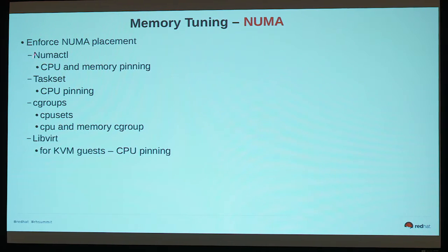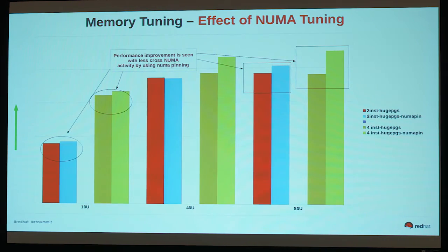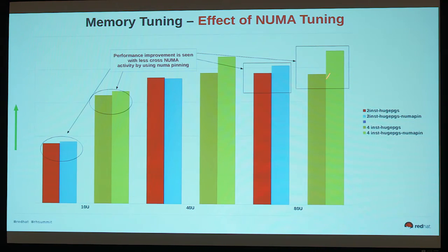Various ways to do NUMA placement include numactl, taskset, cgroups, or libvirt for KVM. At a lower user count where there weren't too many cross-NUMA accesses and memory utilization was fairly low, you see only a little gain from pinning. But once you push harder, adding more processes and accessing more memory, NUMA pinning clearly gives a nice jump in performance. Four instances with NUMA pinning is significantly better than without proper pinning.